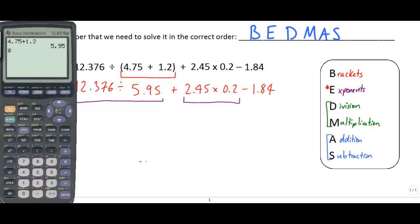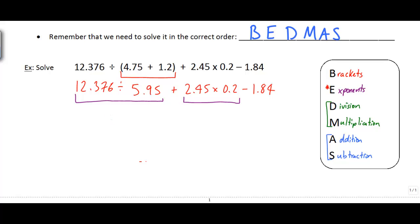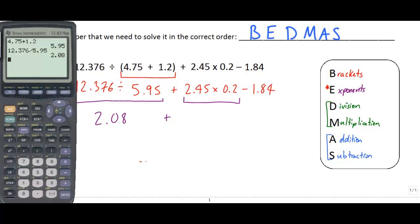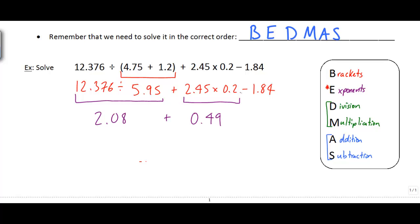I've got 12.376 divided by 5.95 and I get 2.08 plus, I'm going to do this step as well, 2.45 times 0.2 is 0.49. And I can't forget that I've still got this last one here that I need to do, minus 1.84.